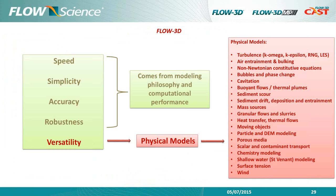Summarizing the key aspects of FLOW-3D: speed, simplicity, accuracy, and robustness come from the core modeling philosophy about treating free surfaces and objects within fixed grids. The versatility comes from the secondary or auxiliary physical models built on top of the core solver, which can be activated as needed.